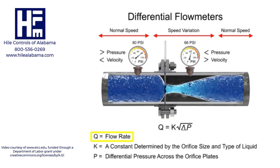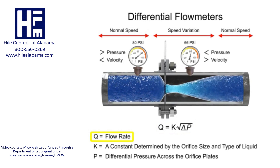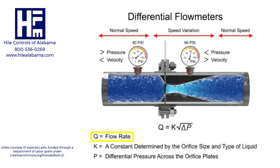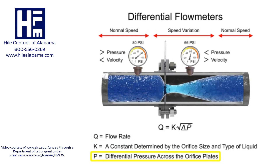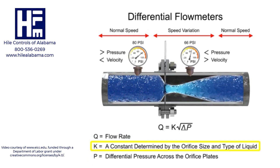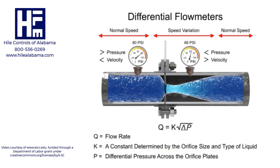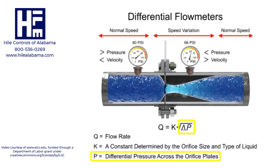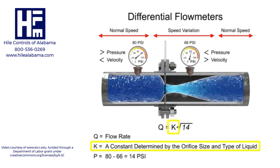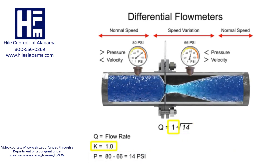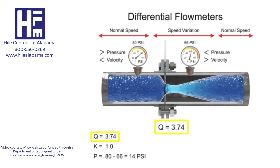The flow rate, Q, of a fluid through an orifice plate increases in proportion to the square root of the pressure difference on each side multiplied by the K factor. For example, if the differential pressure increases by 14 PSI with a K factor of 1, the flow rate is increased by 3.74.